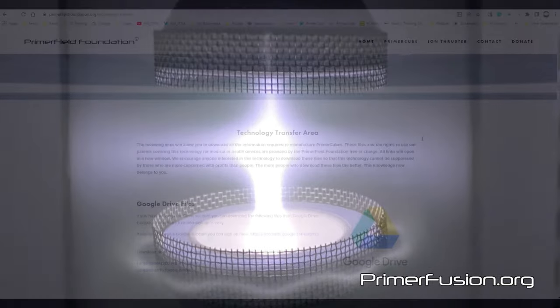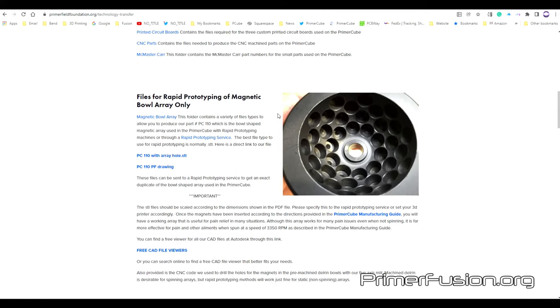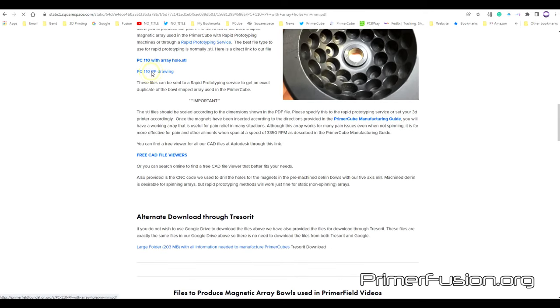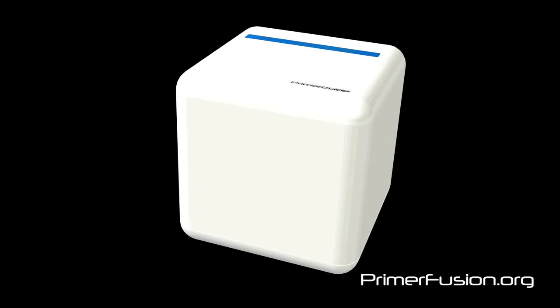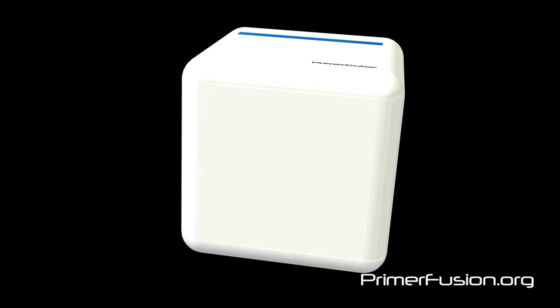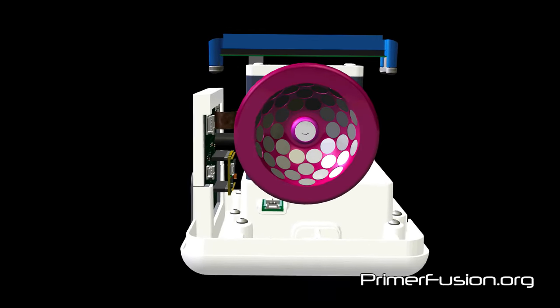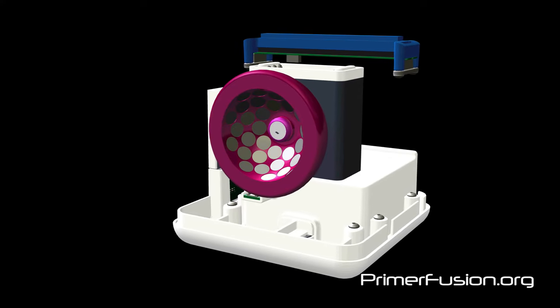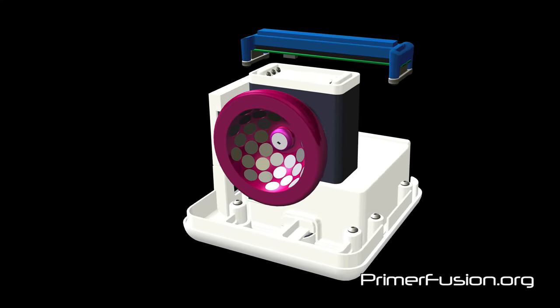In the technology transfer area of our website, you will find over 200 megabytes of files available for download free of charge. These files provide all the information needed to produce our patented magnetic arrays and other devices I have designed that emit structured magnetic fields. The Primerfield Foundation has provided the rights to produce these magnetic arrays and some of our other technologies on an open source basis for specific applications.